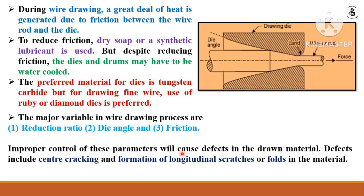Improper control of these parameters causes defects in the drawn material. Defects include center cracking and formation of longitudinal scratches or flaws in the material. Wire drawing is used to make wire materials for electrical appliances, household applications, industrial applications, and also for making rod materials, solid rods, and hollow pipes. Materials with good ductility are suitable for the wire drawing process.